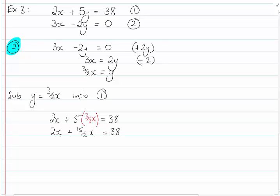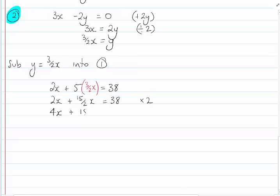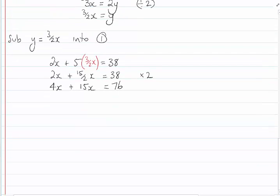Which gives me, now because I have a fraction of 15 over 2, I'm going to multiply everything by 2. And that will give me 4x plus 15x, because the 2 I mod pod there cancels that 2 out. Equals 76. You can use the calculator for that.